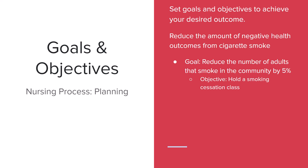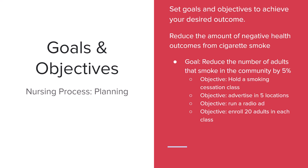An example objective would be holding a smoking cessation class. Another one might be to advertise in five locations where you know that people gather who are more susceptible to smoking. You could also have an objective to run a radio ad. And then another one could be to enroll 20 adults in each smoking cessation class that you're holding. Whatever your goals and objectives are, you need to make sure that there are SMART goals, which means that they are specific, measurable, achievable, relevant, and time-bound. When you try to find funding for your program planning, you have to write them down in a SMART manner.